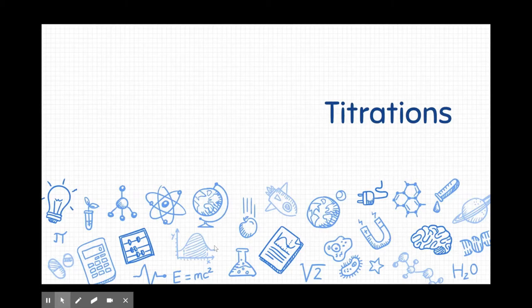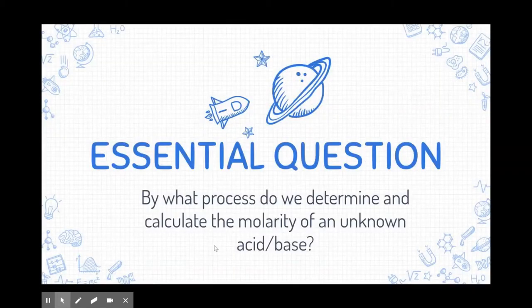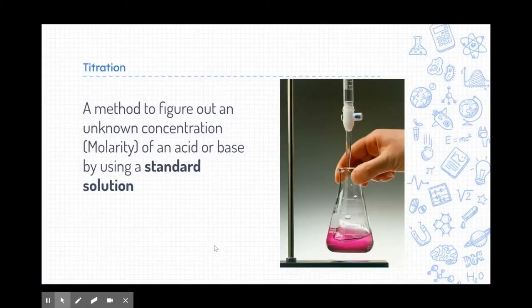Let's go ahead and take a look at our essential question for the day: by what process do we determine and calculate the molarity of an unknown acid or base? And we're going to do this through a process called titration, which is the method we use to figure out that unknown concentration, that unknown molarity of an acid or base.